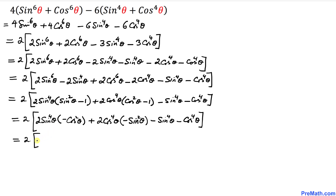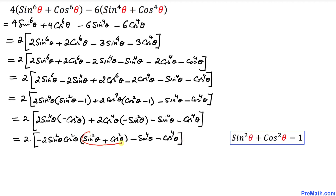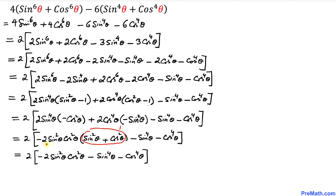So let's write this as 2 times, inside the bracket: factor out negative 2 sine squared theta times cosine squared theta, leaving sine squared theta plus cosine squared theta inside the parentheses. Since sine squared theta plus cosine squared theta equals 1, this simplifies to negative 2 times sine squared theta cosine squared theta times 1, which is simply negative 2 sine squared theta cosine squared theta. The remaining terms are minus sine to the power 4 theta minus cosine to the power 4 theta.